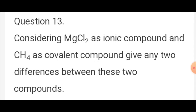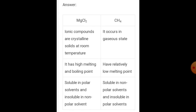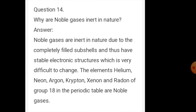Question number 13: considering magnesium chloride as an ionic compound and methane as a covalent compound, give any two differences. Ionic compound MgCl2: crystalline solid at room temperature, high melting point, soluble in polar solvents because Mg2+ and Cl- ions are formed, insoluble in non-polar solvents like benzene and carbon tetrachloride. Methane: exists in gaseous state, relatively low melting point, soluble in non-polar solvents.